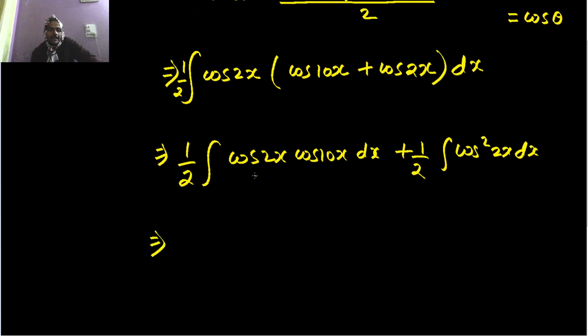Now again here I can use the same formula once again. So one more half can come out and you will get cos of sum, cos of difference. Again, minus 8 can be written as cos 8x.